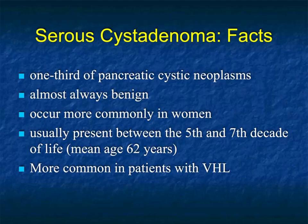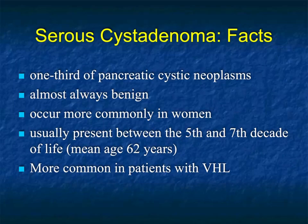Serous cystadenomas make up about one third of pancreatic cystic neoplasms. 99% of the time they're benign, and if you knew something was a serous cystadenoma - assuming it wasn't causing symptoms from mass effect - you could leave it alone because it's not going to become a malignancy. They're more common in women, with a mean age of 62 years, typically presenting in the fifth to seventh decade. In patients with von Hippel-Lindau syndrome, about 7% to 9% of the cysts are serous cystadenomas.